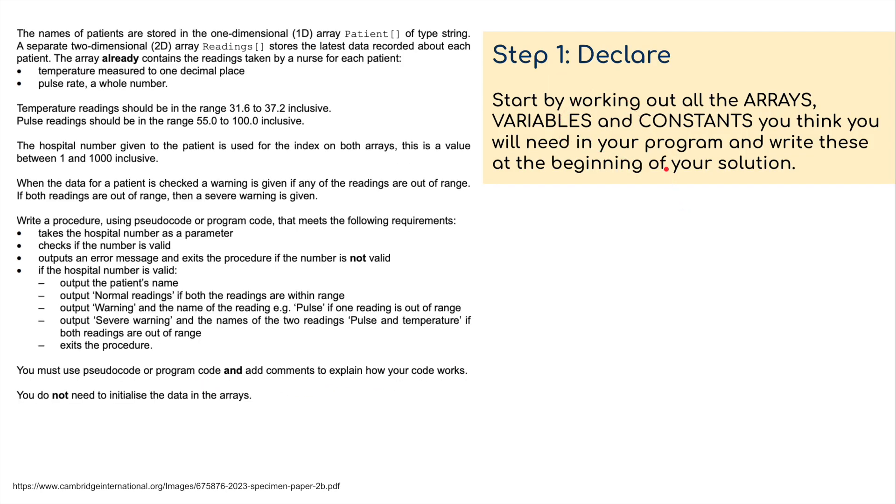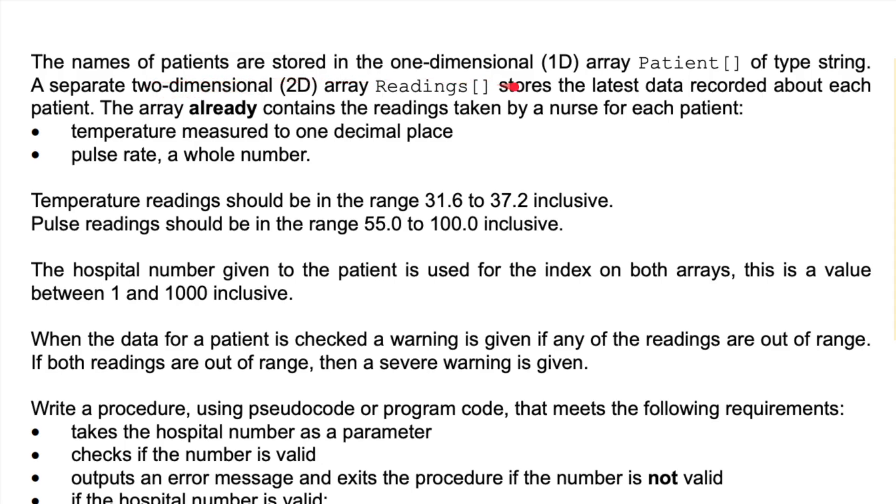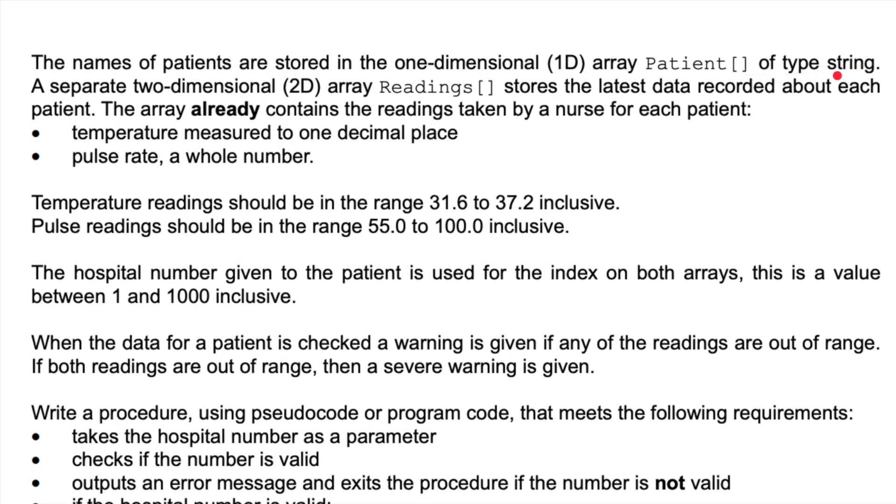Step one, I'm going to read through this and declare all the arrays, variables, and constants I think I'm going to use. The names of patients are stored in a one-dimensional array called patient, type string. A separate two-dimensional array called readings stores the latest data recorded about each patient. The array already contains the readings taken by a nurse: temperature measured to one decimal place and pulse rate as a whole number.